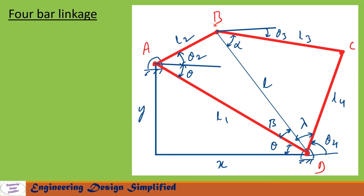Let us draw a line from B to D and call that length l. The angle from the fixed link to this diagonal is theta, the angle from the diagonal to the crank is theta2. We also define this angle as alpha, this angle as lambda, and this angle as beta.